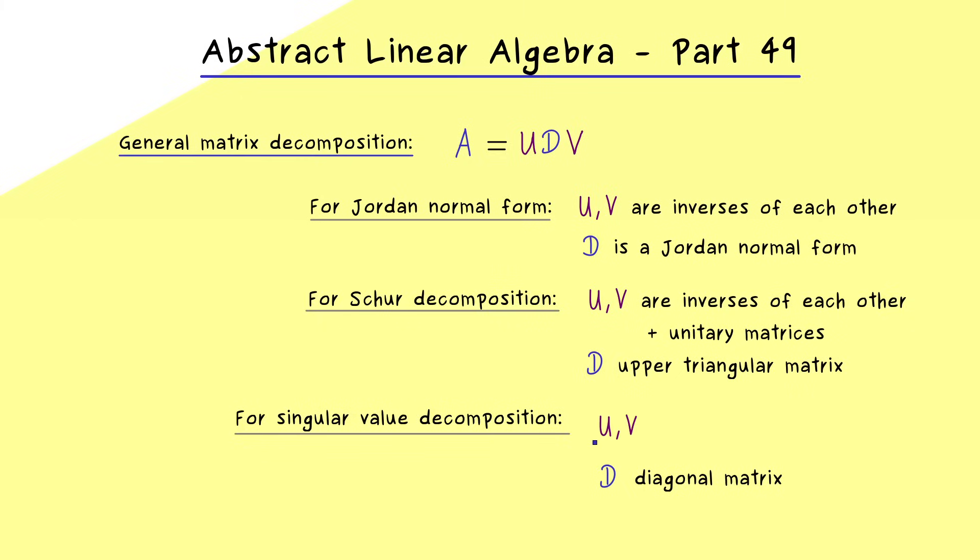However, we still want that U and V are invertible matrices, which means that A and D are definitely equivalent matrices. And moreover, it turns out that we can also keep the property of the Schur decomposition, which means that U and V can be chosen as unitary matrices. So these two things together make the singular value decomposition what it is. We transform with unitary matrices and we transform to a diagonal matrix.